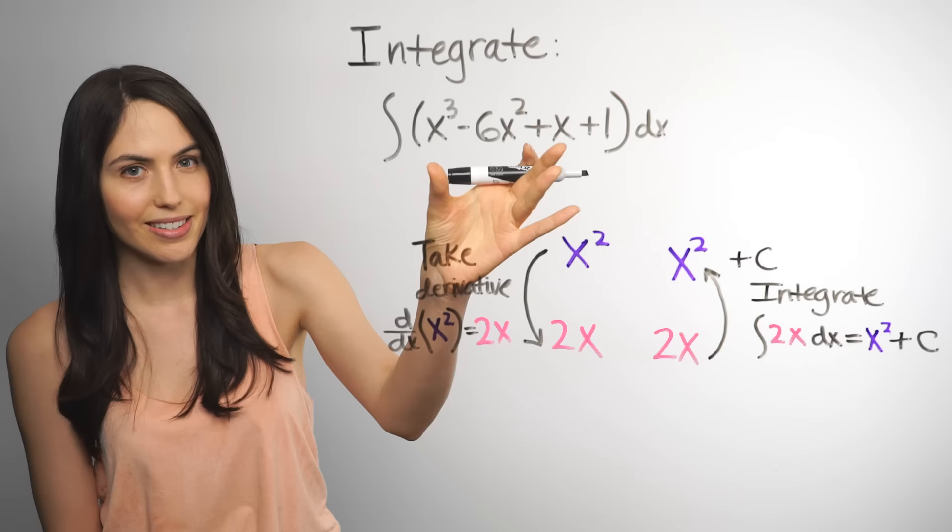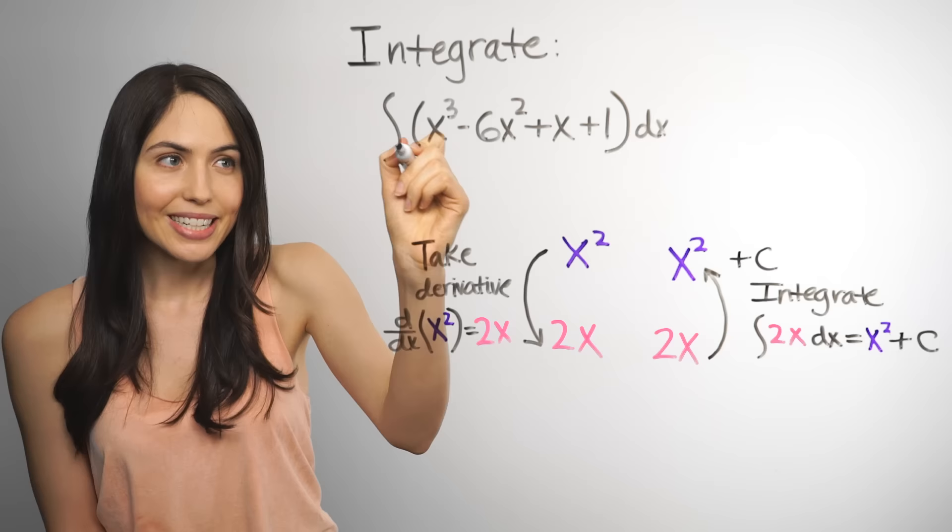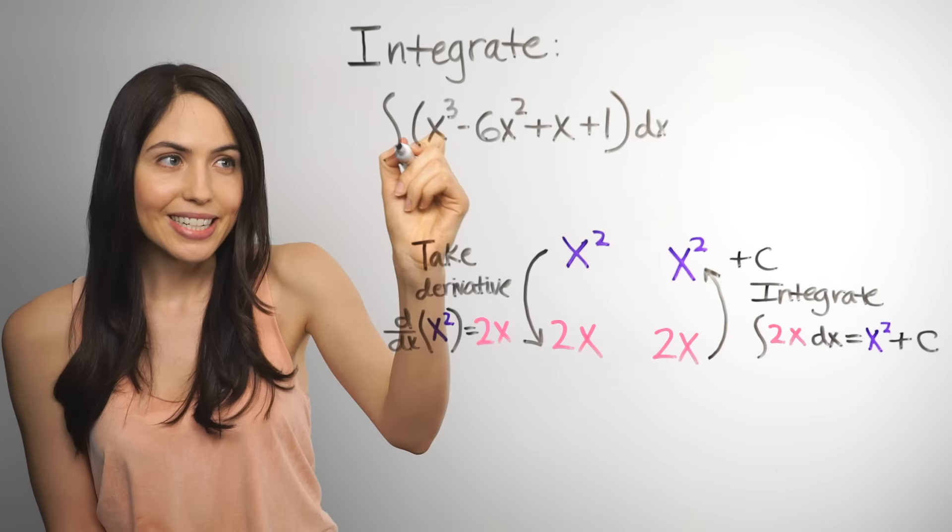So for a polynomial like this, with a bunch of terms added and subtracted, we can integrate each term one by one and then string them together for the full integral. So let's do it.